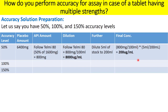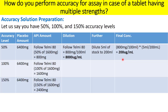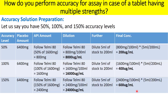Similarly, for 100% and 150%, the placebo amount remains the same — 6400 mg. For 100%, take 1600 mg of API and dilute to 100 ml; for 150%, take 2400 mg of API and dilute to 100 ml. Keep the further dilution the same — 5 ml to 200 ml for all accuracy levels. For 100%, the final accuracy solution concentration is 400 µg/ml.